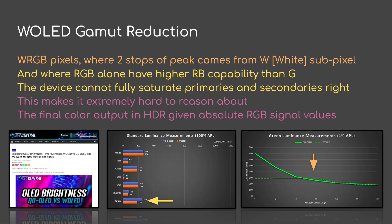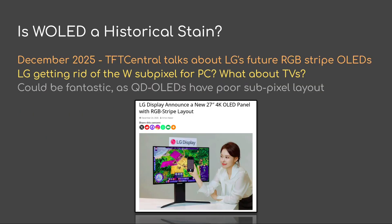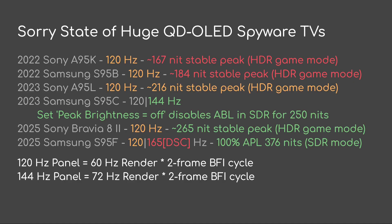This is because the RGB ratios are not designed to produce white, and therefore it can't get the full saturation on secondaries right. If you combine these two problems, it makes it extremely hard to reason about the final color output in HDR given the absolute RGB signal values. Another question: is W OLED a historical stain? As of December 2025, TFT Central talks about LG's future RGB stripe OLEDs. So an open question — is LG getting rid of the W sub-pixel for PC? This could be fantastic, as QD OLEDs have poor sub-pixel layout.